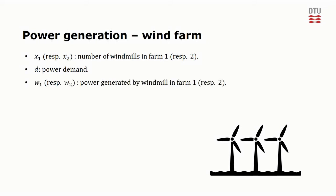Parameters w1 respectively w2 represents the amount of power generated from an average windmill in wind farm 1 respectively 2. There is a cost associated with buying and setting up a windmill. This cost is given by C, independently of which wind farm the windmill belongs to. A windmill has an expected lifetime which has been taken into account in C, such that C is the per-year cost of the windmill.